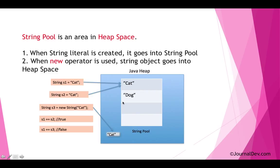Looking at this image: when I say String s1 = "cat", it creates a string in the string pool with value cat. When I say String s2 = "cat", it checks the string pool, finds there is already a string with value cat, and just returns the reference. When creating s3 with the new operator, that object is created in heap memory. That's why s1 == s2 is true — both references and values are the same — whereas s1 == s3 is false.